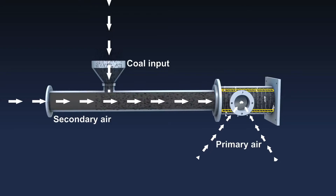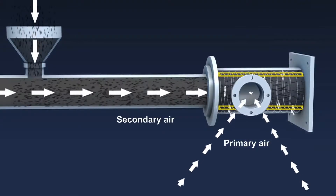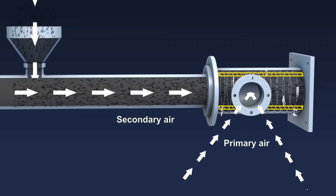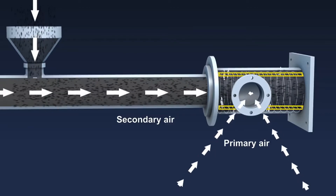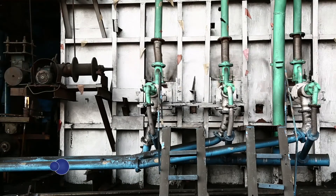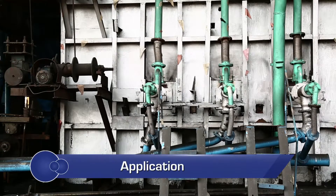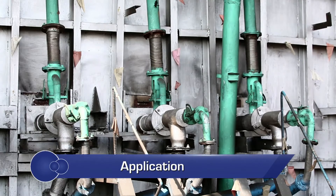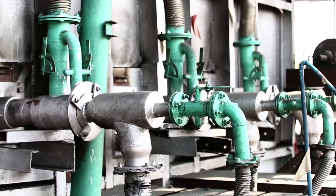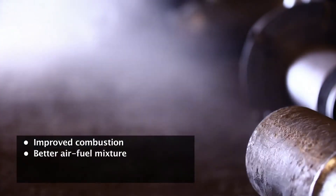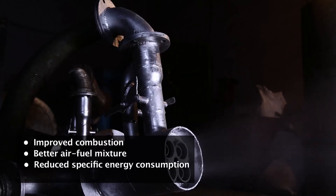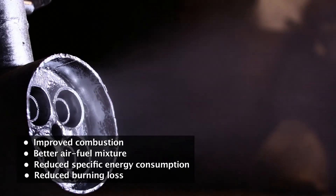The turbulence caused due to the rotation of the air fuel mixture, generated by the vanes swirl generator, results in proper air fuel mixing and better combustion of fuel. Swirl burners can be used for any capacities of furnaces fired by pulverized coal and have the following advantages over a conventional furnace: improved combustion, better air fuel mixture, reduced specific energy consumption and reduced burning losses.